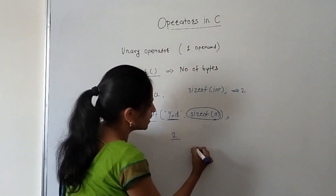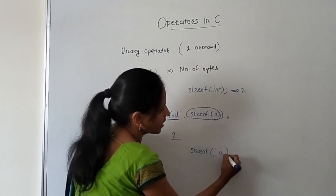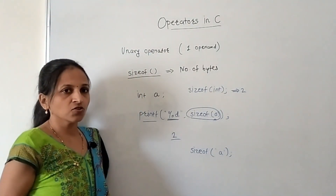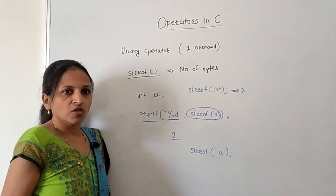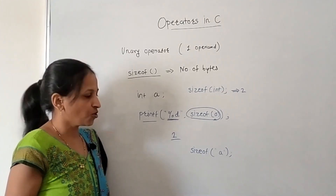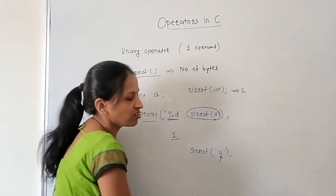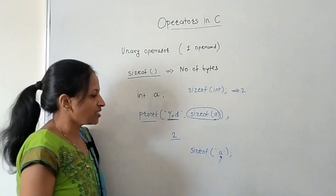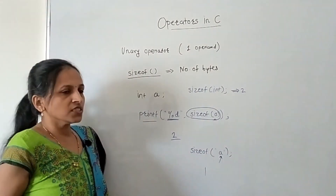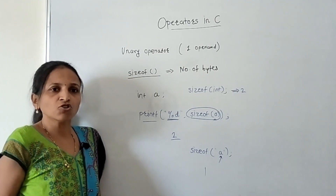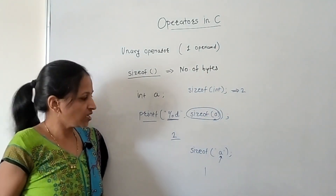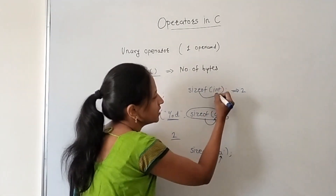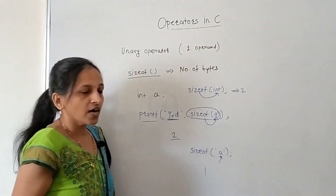sizeof can be used with data types like int, or with variables, or with literal values. It is a unary operator because it acts on a single operand — whether that operand is int, a variable a, or a character literal. This is the sizeof operator used to get the size of any data type, variable, or value.